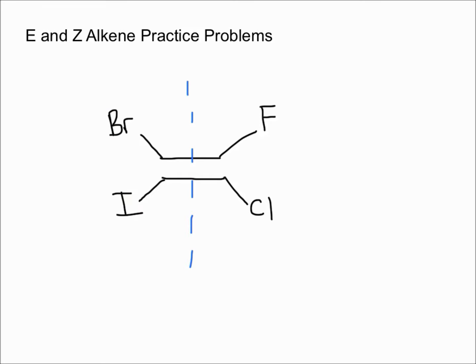In order to do this, we're going to look at the atomic numbers of bromine and iodine. The atomic number of bromine is 35, while the atomic number of iodine is 53. The higher atomic number gets the highest priority, so in this case the iodine gets the higher priority.